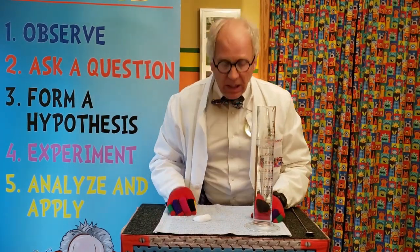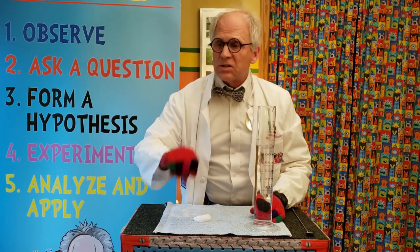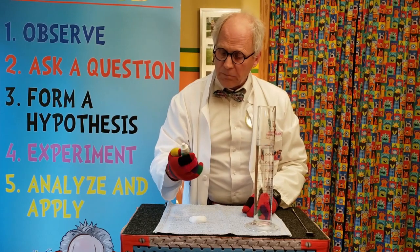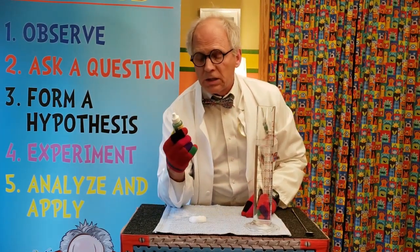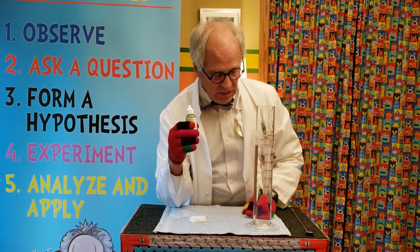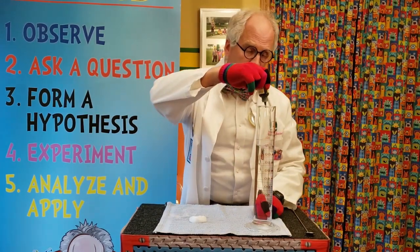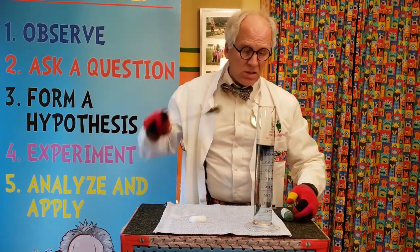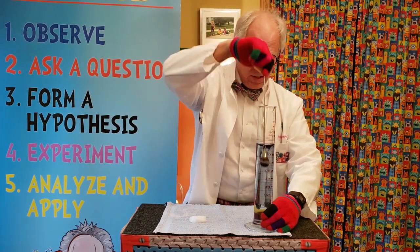I wanted to talk to you a little bit about acids and bases. Acid means there are hydrogen ions in there. Base means there are no hydrogen ions. So I have something called universal indicator here. Universal indicator tells how much hydrogen ions is in a solution. If I put universal indicator in here, it gets nice and blue, which means this water has no hydrogen ions in it.